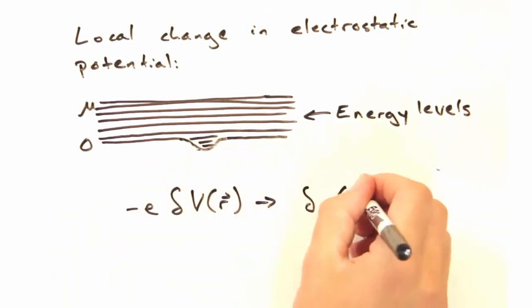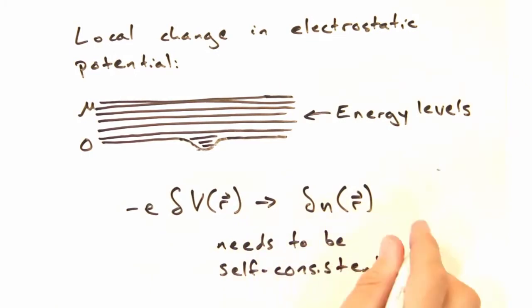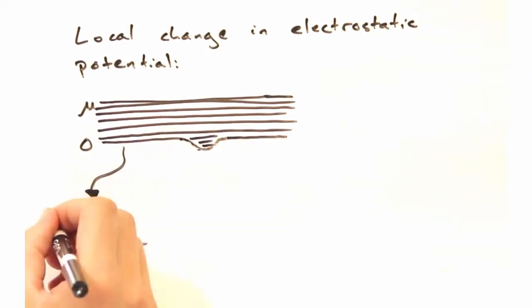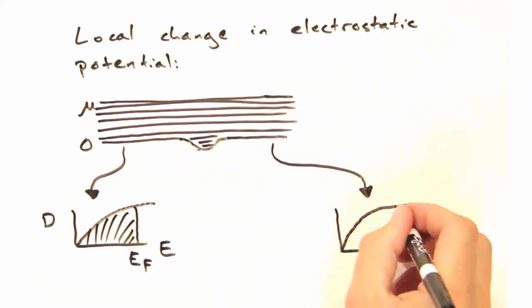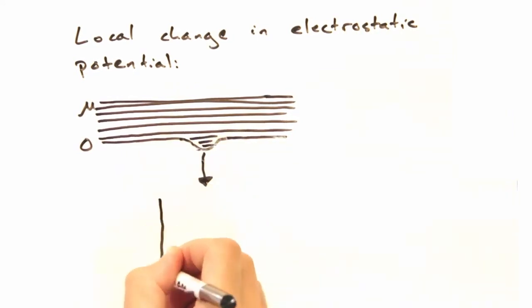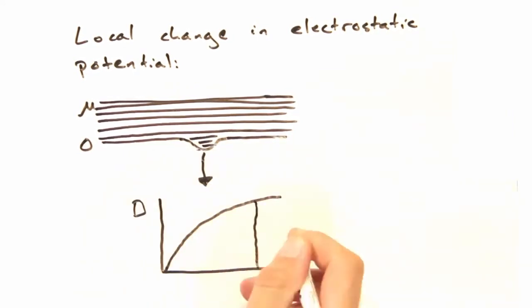The local change in potential needs to be self-consistent with this change in electron density. Away from the perturbation, the density of states is what you might expect with filled states to the Fermi level.